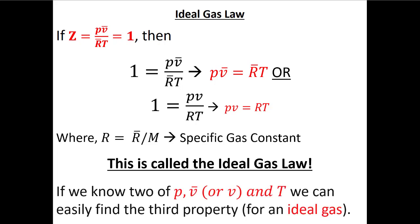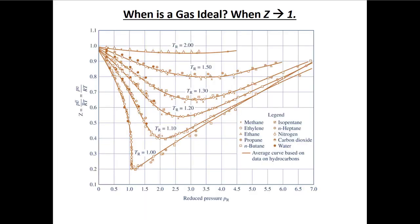The specific gas constant equals the universal gas constant divided by the molar mass of the specific gas. Different gases have different molar masses, so you'll have a different value for every gas. This is the ideal gas law — we have an ideal gas when the compressibility factor approaches one. If we know something is an ideal gas and we know two of the three variables P, v, and T — plus what gas it is — we can find the third.